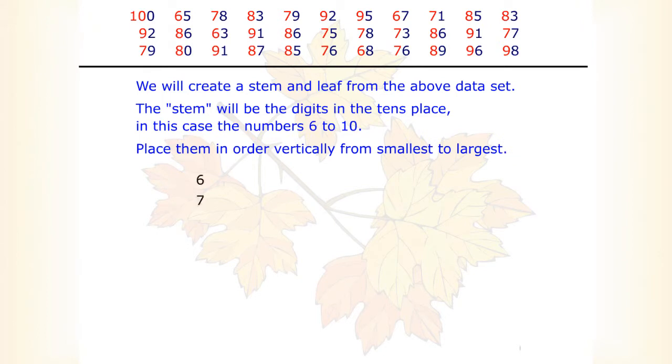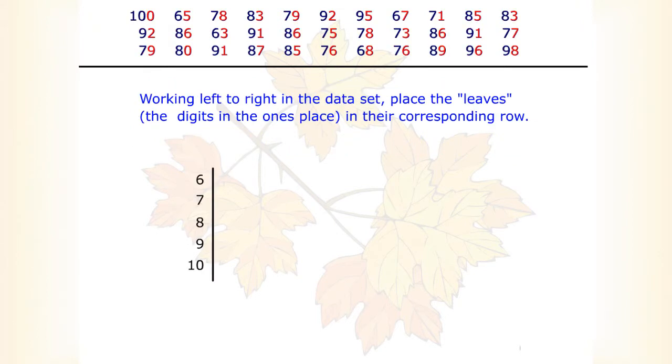Place them in order vertically, from smallest to largest. Working from left to right in the dataset, place the leaves, the digits in the ones place, in their corresponding row.